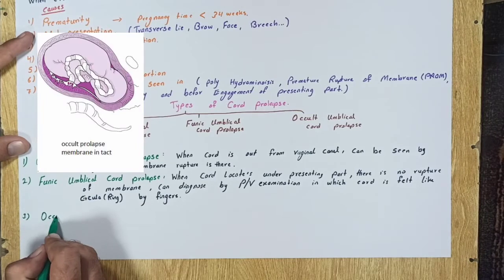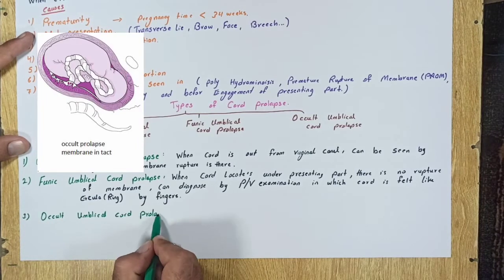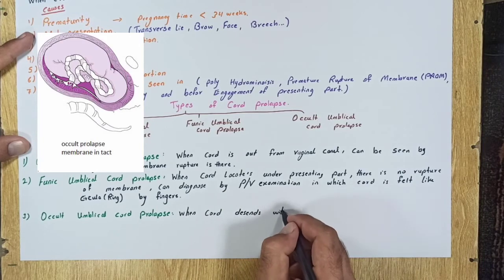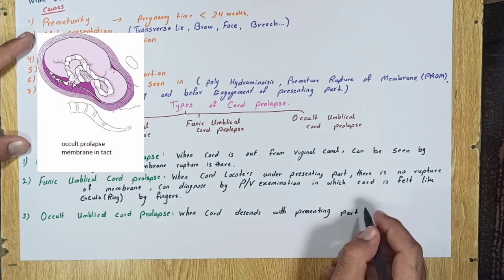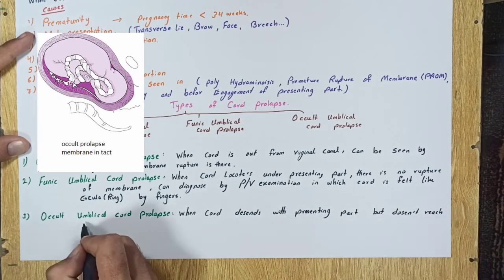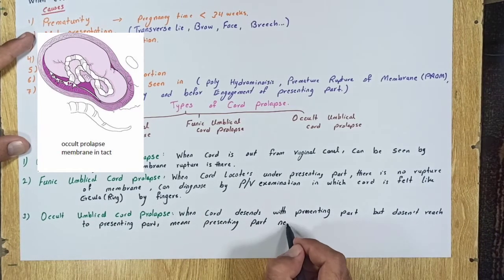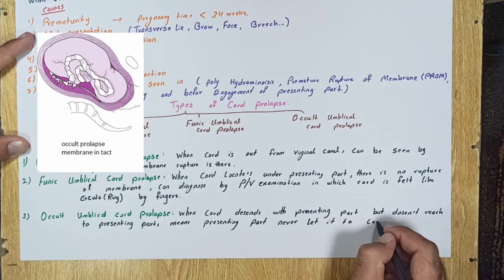Third one is occult umbilical cord prolapse. When umbilical cord descends with presenting part but doesn't reach to presenting parts, means presenting part never lets it come before it.